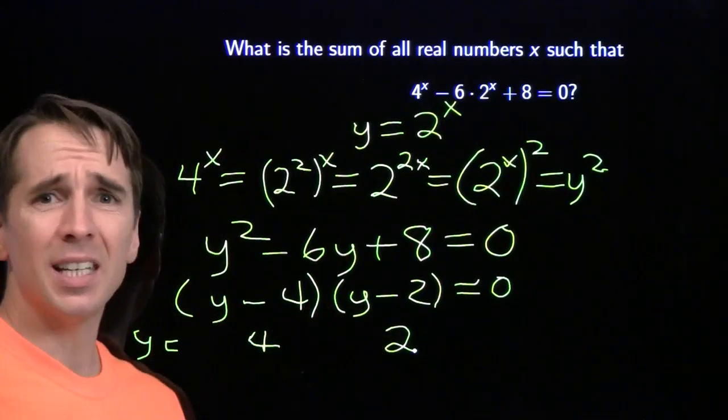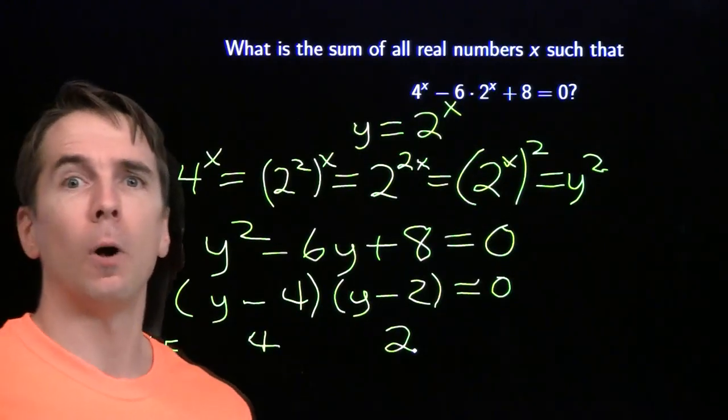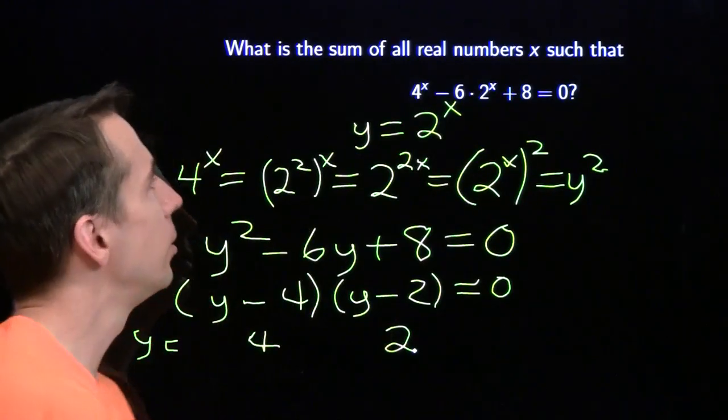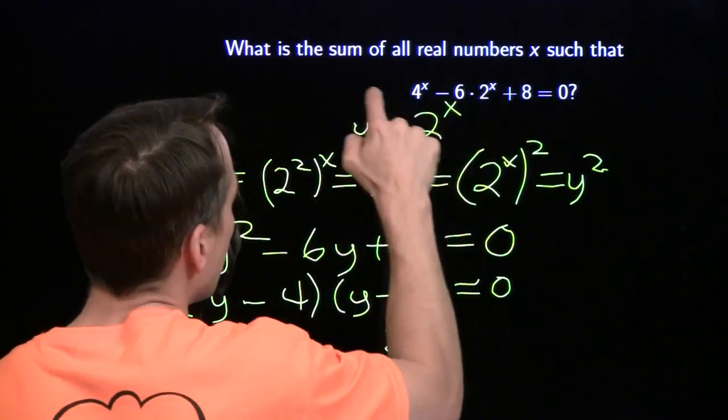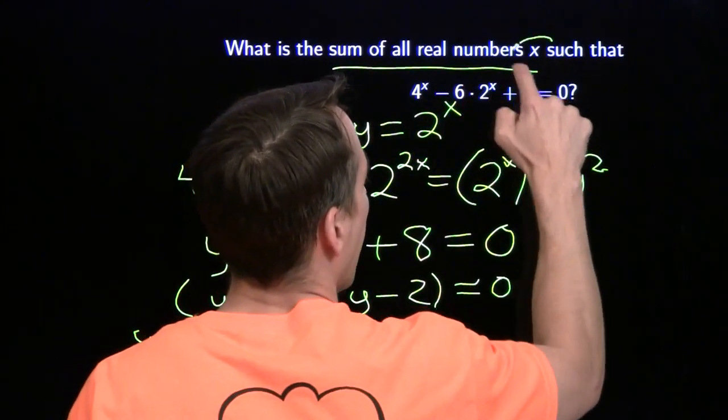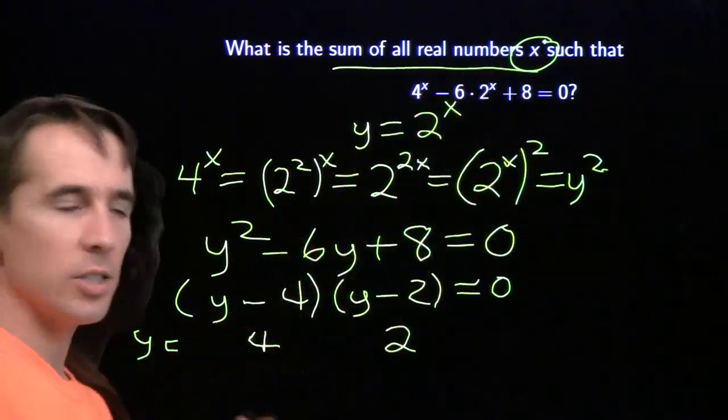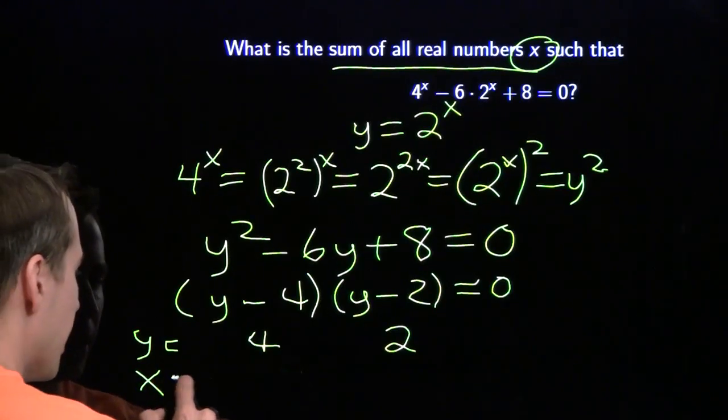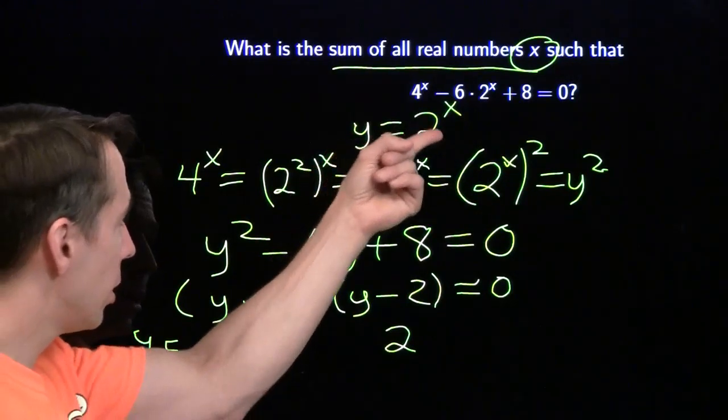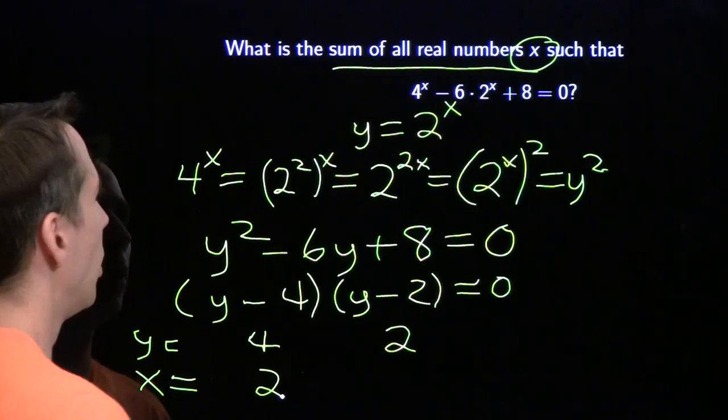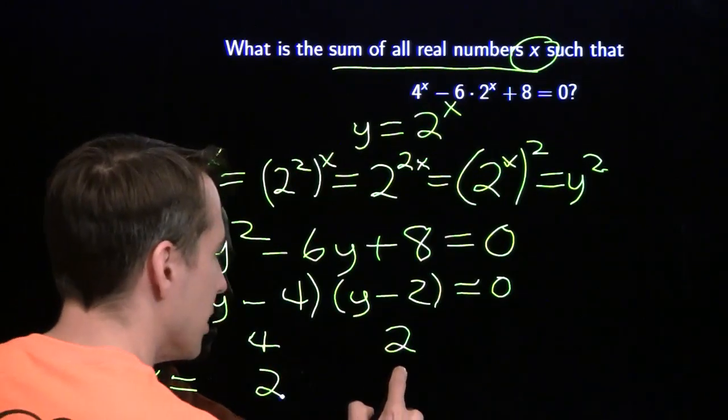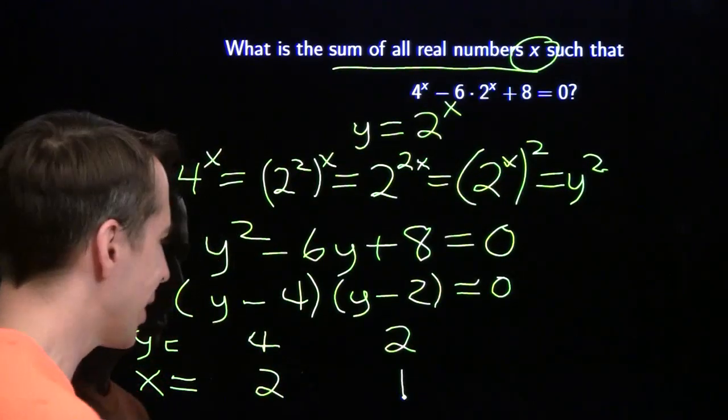So then we just, 4 plus 2 is 6, we put that in the answer, and we are wrong. So you know the drill. Read the question at the end, what are the sum of all real numbers x. We care about x, we have y. So we need to figure out what x is. When y is 4, x is 2. When y is 2, x is 1.